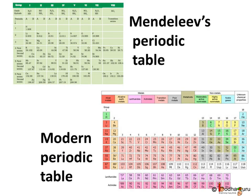Mendeleev's periodic table doesn't support the concept of atomic structure, whereas the modern periodic table supports this fact by grouping elements in such a manner that their electron configuration can be deduced easily. For example, all elements in Group 2 have 2 valence electrons, and all elements in Period 3 have 3 shells or energy levels.